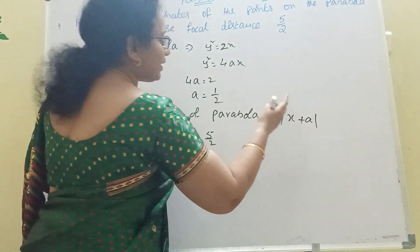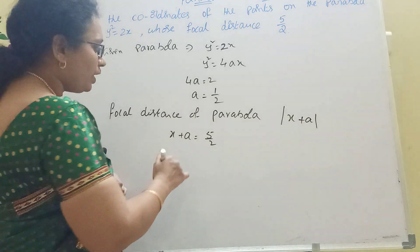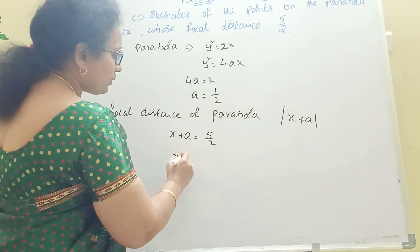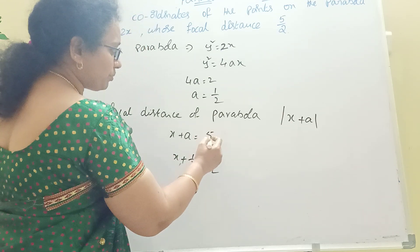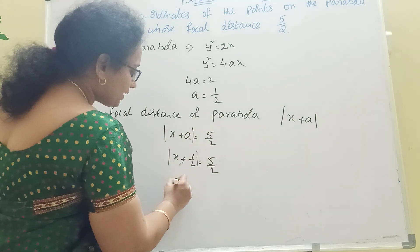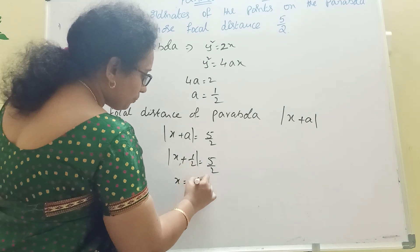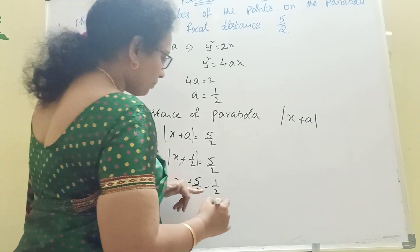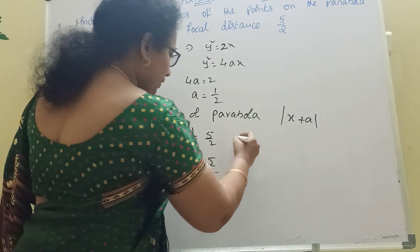So x + a = 5/2. Here a = 1/2, so x + 1/2 = 5/2. Taking the modulus, x = 5/2 − 1/2 = 4/2 = 2. So x value equals 2.